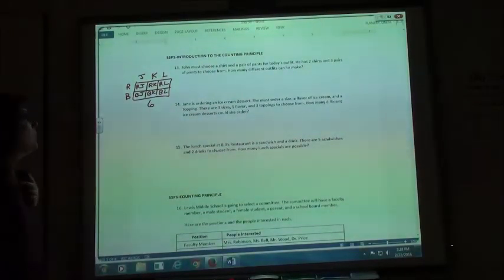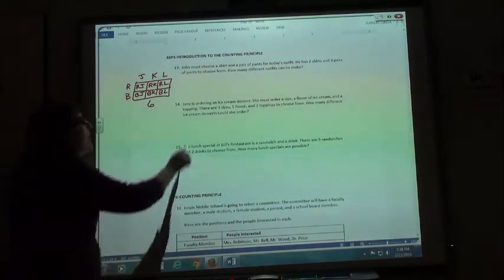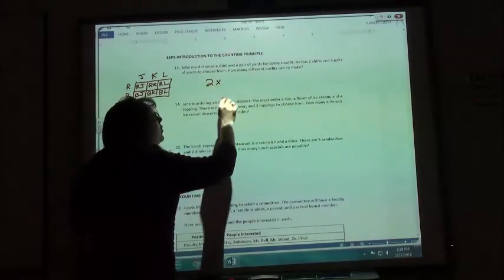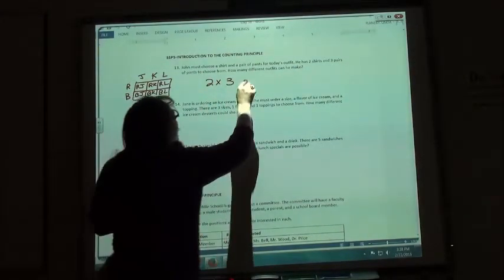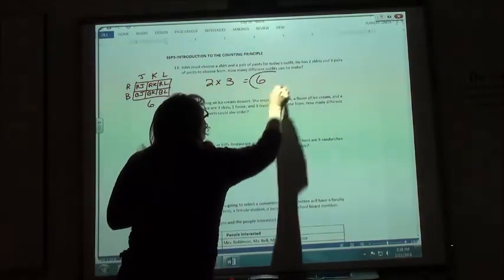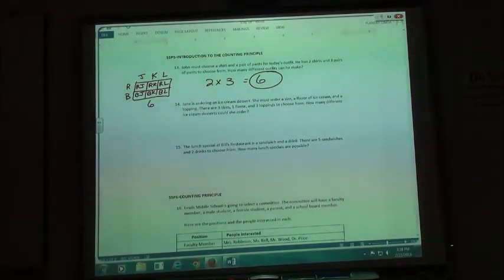I've got six possible ways of doing that because I had two ways to do my shirt, three ways to do my pants. Two times three gives me six different outfits that I can make.